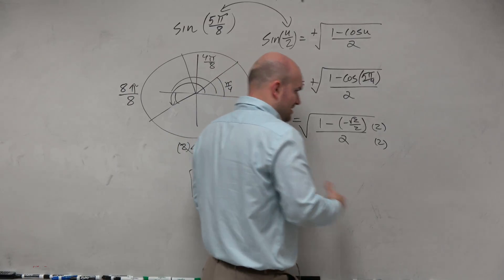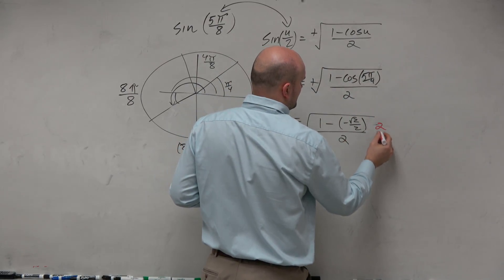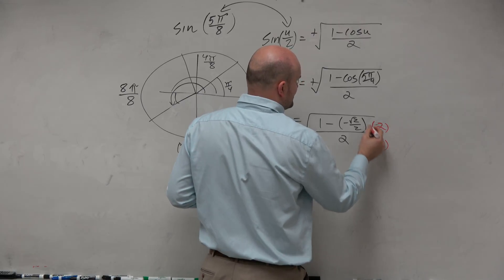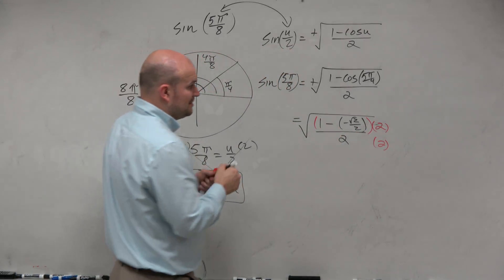Just remember, guys, when you're multiplying by that 2, when you put the 2 in there, just make sure you remember that's in parentheses. And again, this is all happening under the radical.